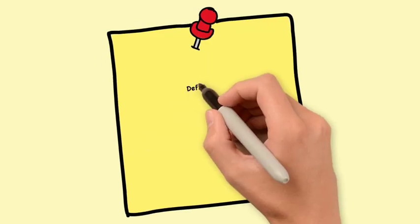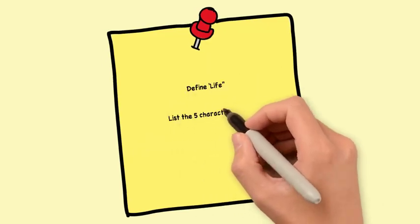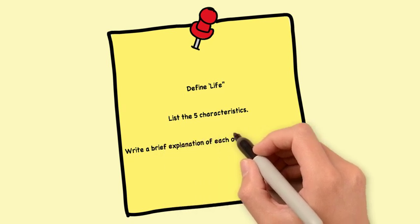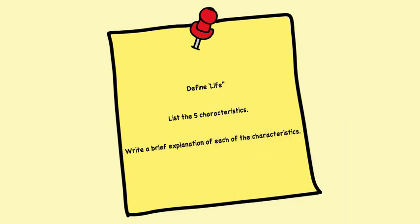If you know this chapter, you should be able to define life. You should be able to list the five characteristics of life and write a brief explanation of each of those five characteristics.